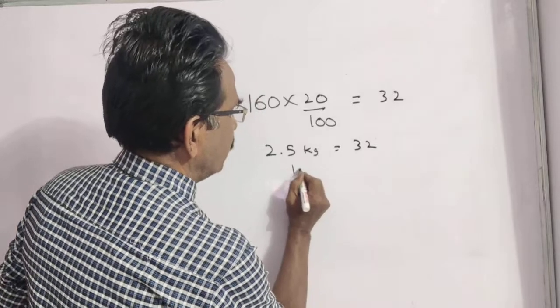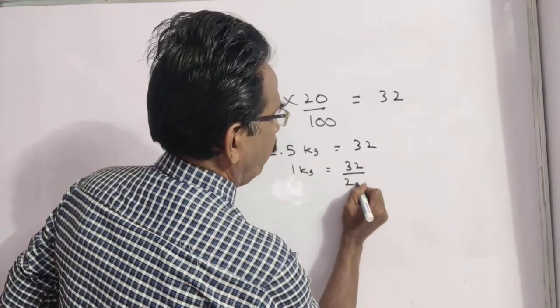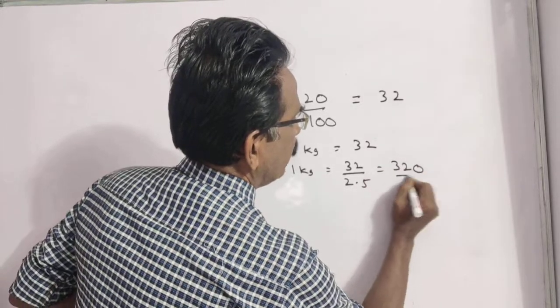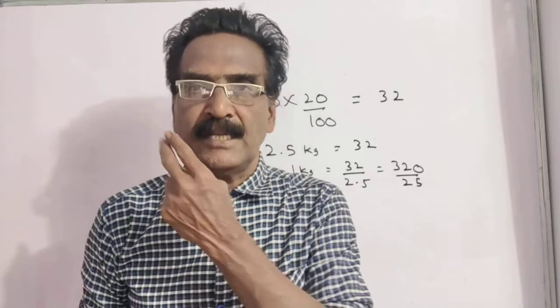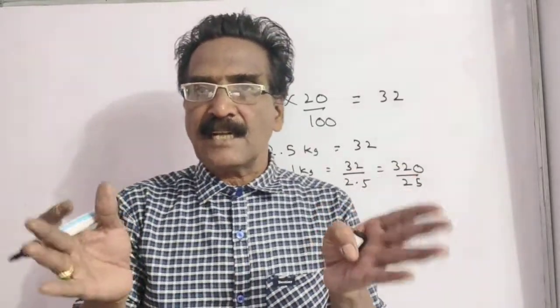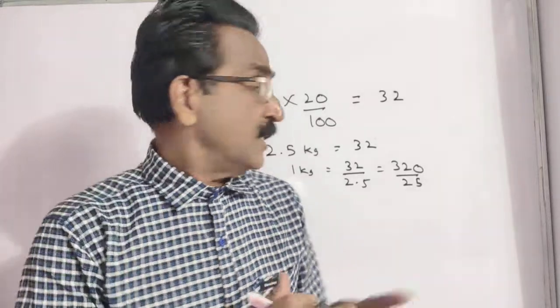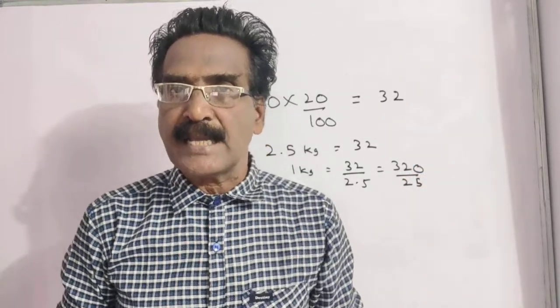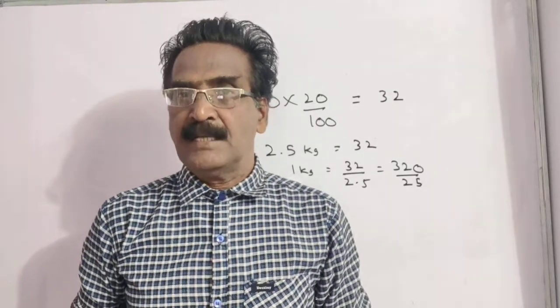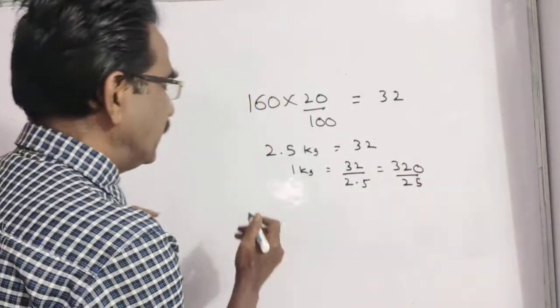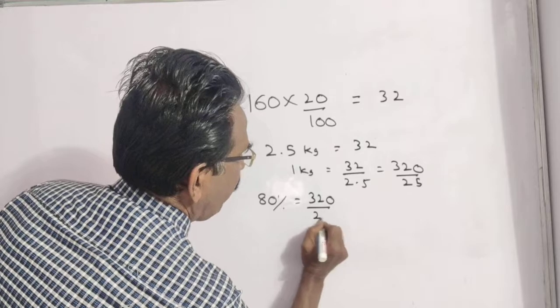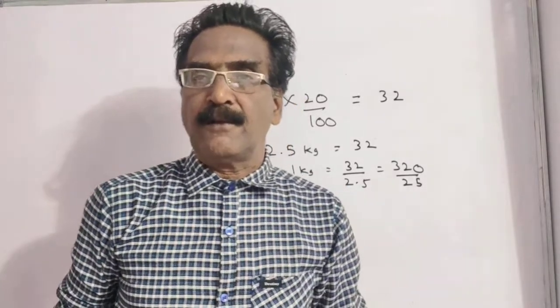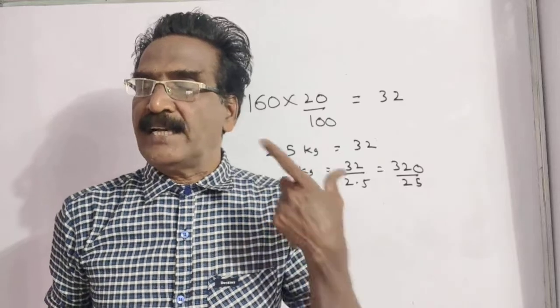So the reduced price per kg is 32 divided by 2.5, which equals 320 by 25. But we need the original price. Since there is a reduction of 20 percent, this 320 by 25 is 80 percent of the original price. So 80 percent is equal to 320 by 25.